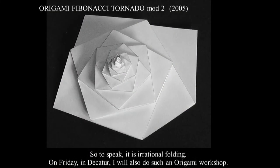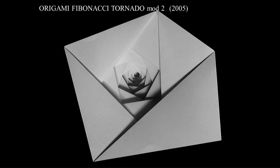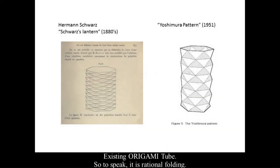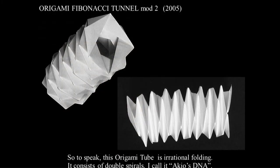This is my origami Tornado, mode two — to speak, it is irrational folding. On Friday at the Gathering, I will also do an origami workshop, please join us. The other side of view: there's no regular polygon, so this is an existing origami tube — rational folding. This is my origami Fibonacci Tunnel, mode two — an origami tube that is irrational folding, consisting of a double spiral.